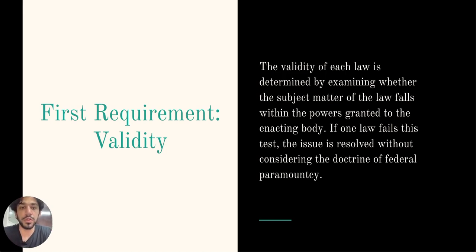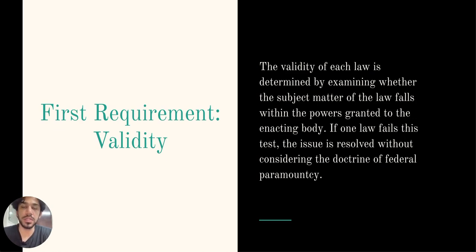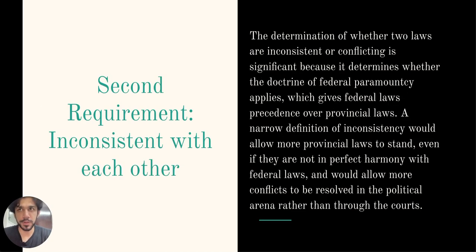The first requirement for the doctrine of federal paramountcy is validity. The validity of each law is determined by examining whether the subject matter of the law falls within the powers granted to the enacting body. If one law fails this test, the issue is resolved without considering the doctrine of federal paramountcy. Only if both laws — the federal law and the provincial law — are found to be independently valid, is it necessary to determine whether they are inconsistent with each other.